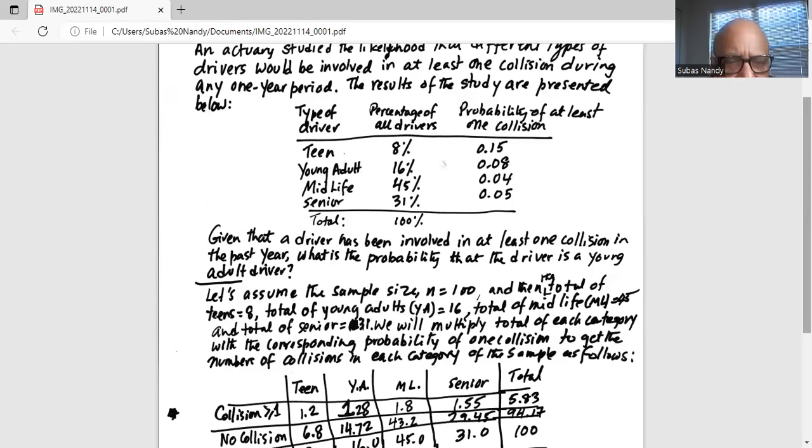And total number of seniors is 31. We will multiply the total of each category with the corresponding probability of at least one collision to get the number of collisions in each category of the sample as follows.